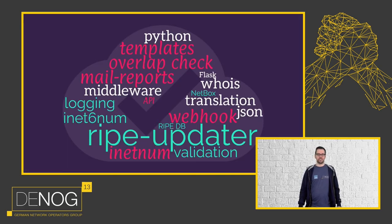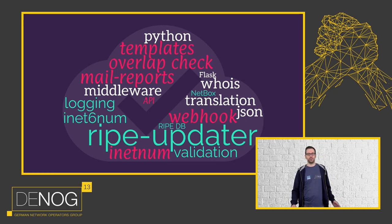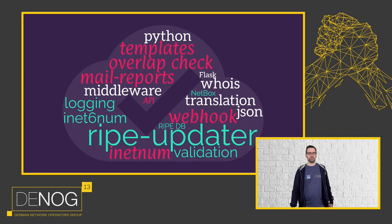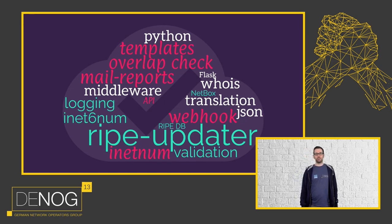This is our result and we call it RIPE Updater. Our goal was to support several features. Most importantly: inetnum and inet6num object automation on creation, update, and deletion. We also want to validate all requests to filter out unwanted prefixes — for example, RFC 1918 addresses you don't want to push into the RIPE database. Handling of overlapping inetnum objects is also important, because you cannot have overlapping inetnum objects in the RIPE database.